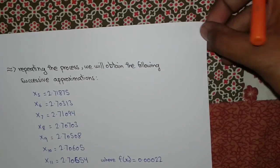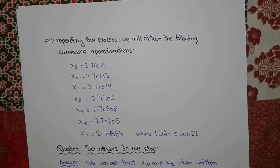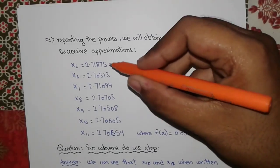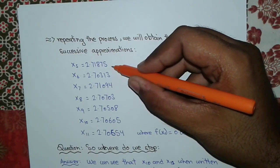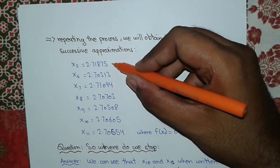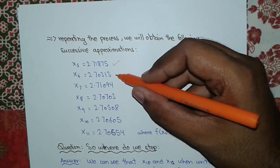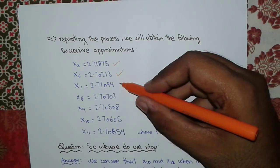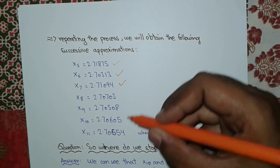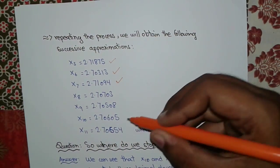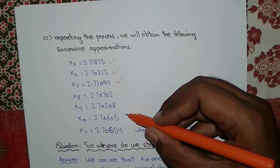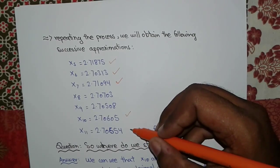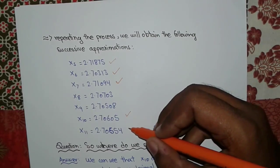Repeating this process, we obtain the following successive approximations: x₅ = 2.71875, x₆ = 2.70313, x₇ = 2.71094, and so on, until x₁₀ = 2.70605 and x₁₁ = 2.70654.